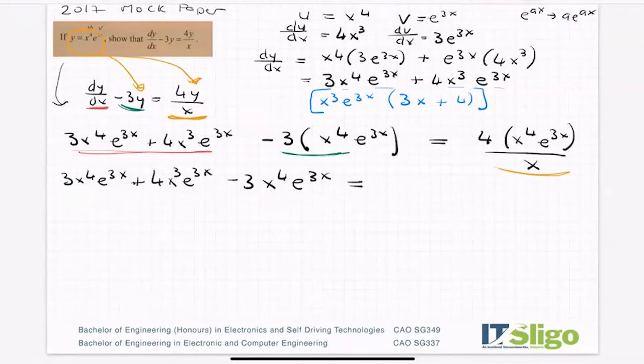Okay, but let's keep going. What do I have here? Well, I can see an x on the bottom cancels with one of the ones on the top. So that's leaving 4x to the 3 e to the 3x. That cancelled with that. So I'm left with 4x to the 3 e to the 3x being equal to 4x to the 3 e to the 3x.